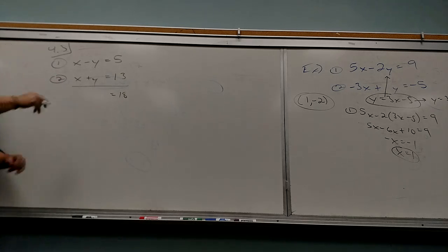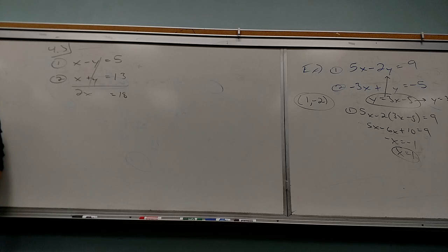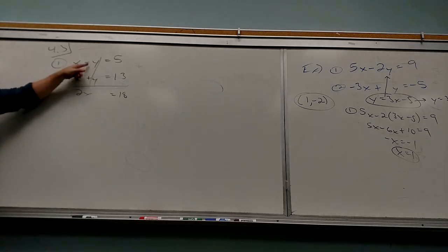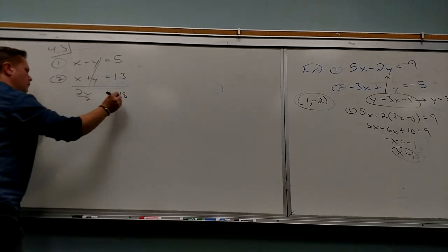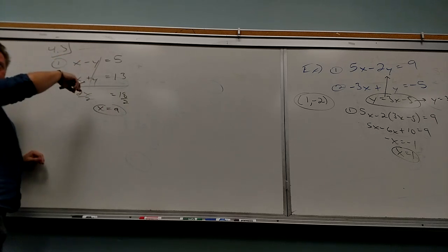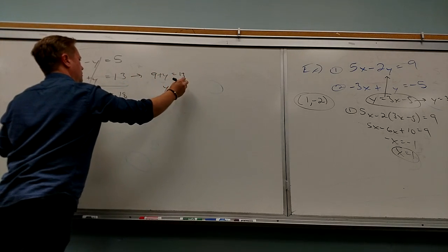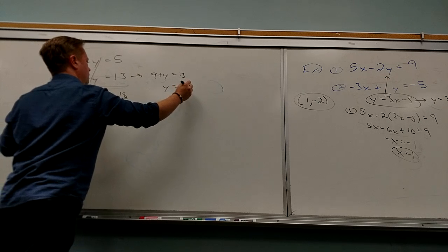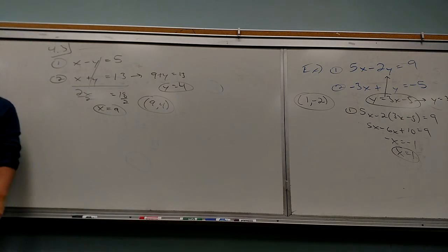When I add them, the Y's cancel and I get 2x equals 18, so x equals 9. Then plug it back into the first equation — 9 plus y equals 13, so y equals 4.